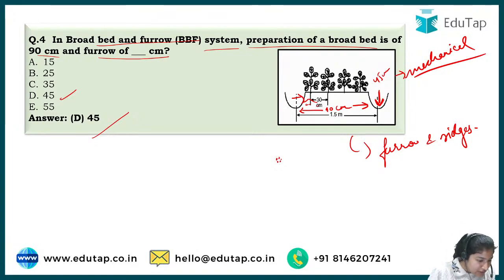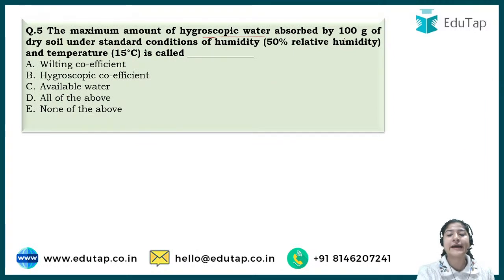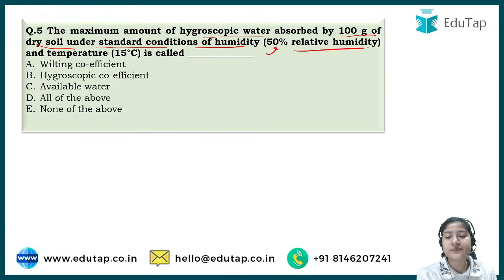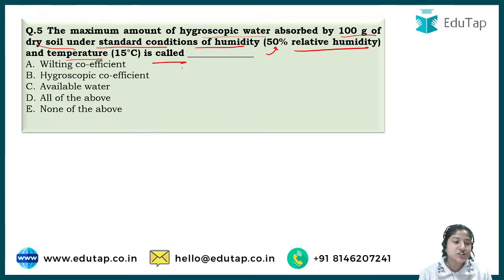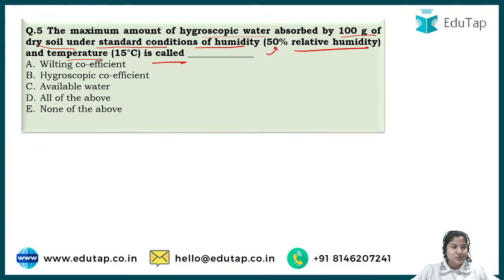Most of you gave the right answer — well done. Now we move to question number five: 'The maximum amount of hygroscopic water absorbed by 100 grams of dry soil under standard conditions of humidity — that is 50% relative humidity — and temperature is called?' This is a definition-based question. Comment down fast so we can wrap up today's session, as this is the last question.